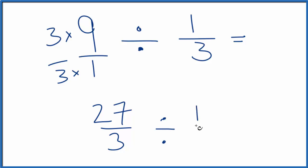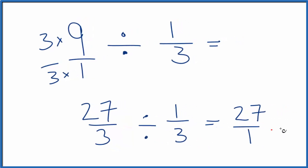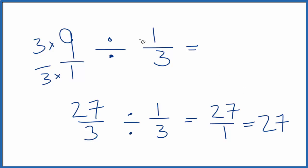We're going to divide that by 1 over 3. 1 goes into 27, 27 times. 3 divided by 3 is 1. So we end up with 27. So 9 divided by 1/3, that's 27.